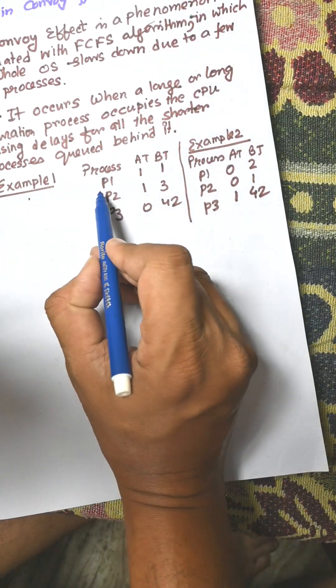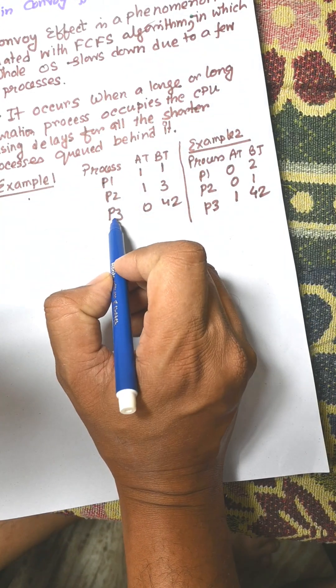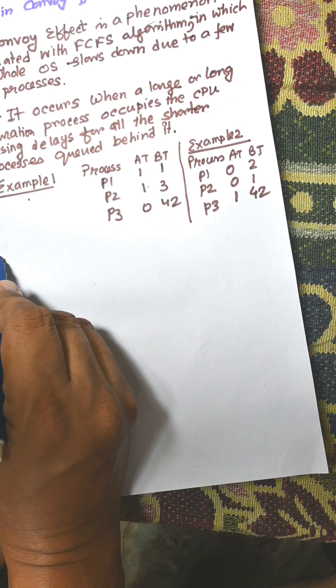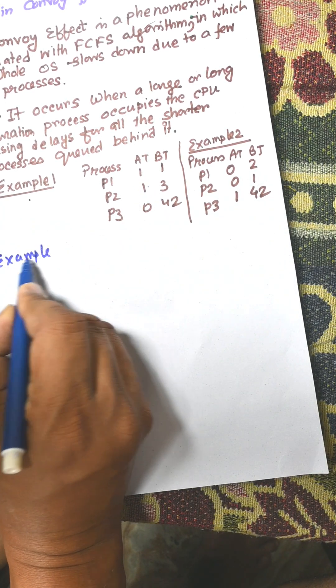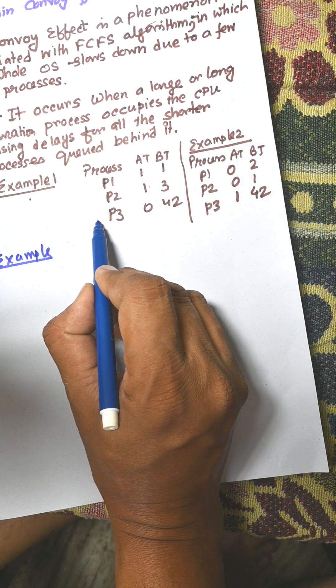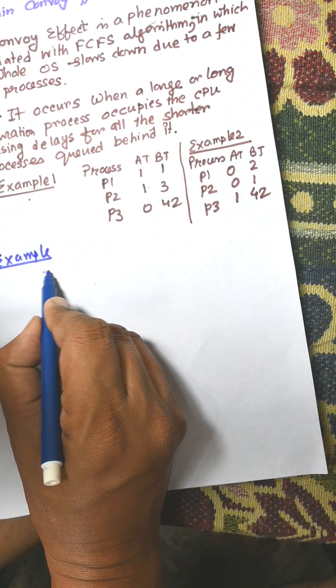Let us consider an example. There are processes P1, P2, P3 with arrival times 1, 1, 0 respectively. For the first example, we need to find the average waiting time. According to arrival time, P3 will be executed first.